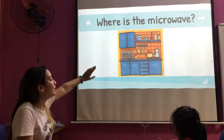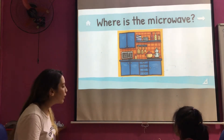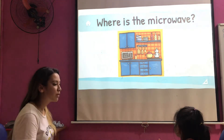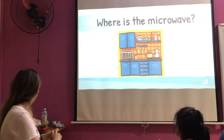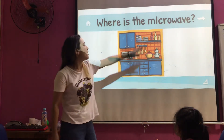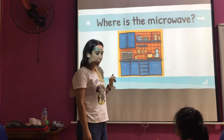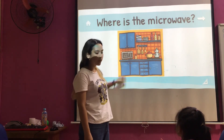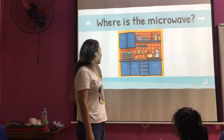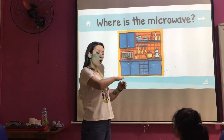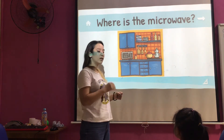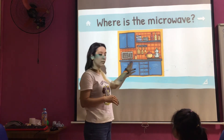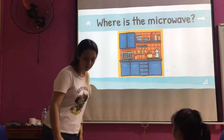Okay. Can you see the microwave? Can you see the microwave in this picture? Where is the microwave? Yes. What is this? It's a microwave. Yes, good. Okay. And where is it? It's on the table. Okay.